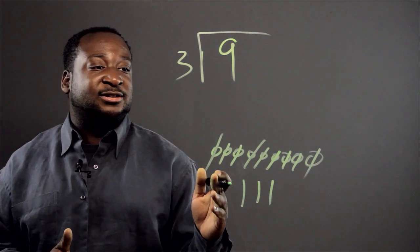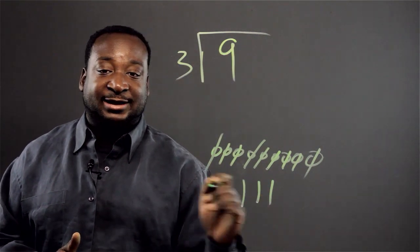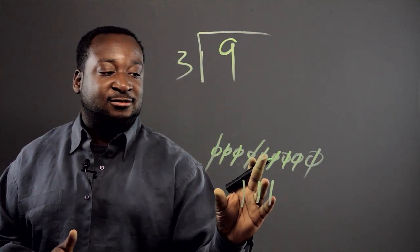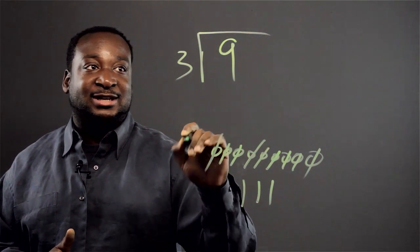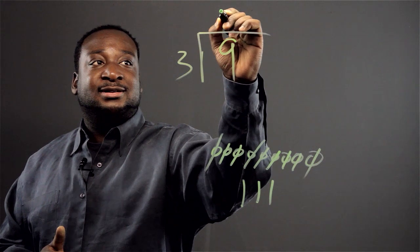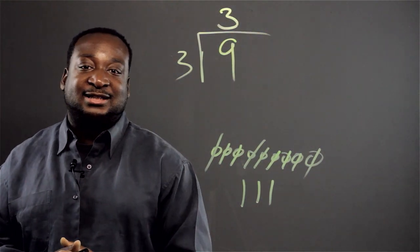So we were able to take away 3 from 9 three times. So that's our answer. 9 divided by 3 is equivalent to 3. And that's the concept of dividing.